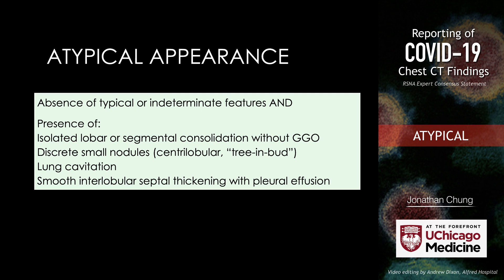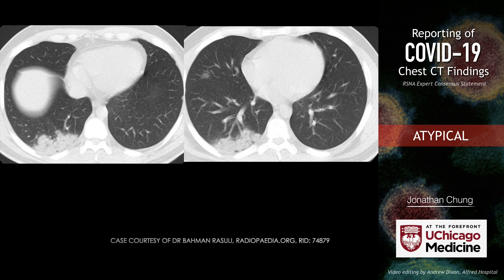For example, if you have isolated lobar or segmental consolidation without ground glass opacity, or discrete small nodules — specifically if they are centrilobular or tree-in-bud in their distribution and morphology — this is very, very unlikely in the setting of COVID-19. That said, if you have tree-in-bud opacities or centrilobular nodules representing possible aspiration, we know that aspiration can be superimposed on COVID-19. Lung cavitation is also pretty unusual in COVID-19 pneumonia. And if you have smooth interlobular septal thickening with pleural effusions, you would be thinking about left-sided heart failure or pulmonary edema rather than COVID-19 first on your differential.